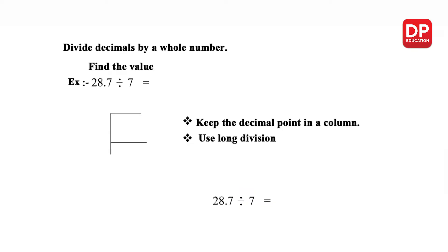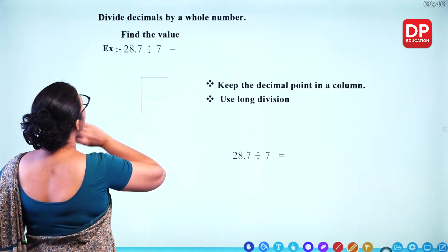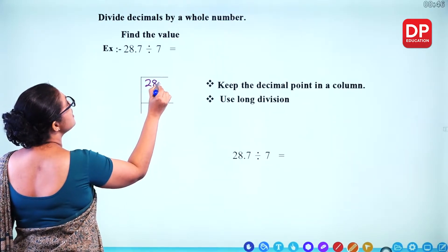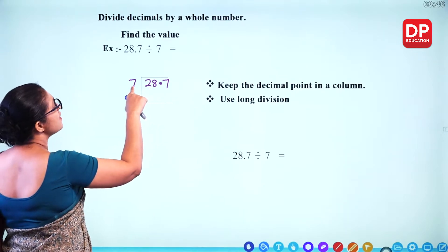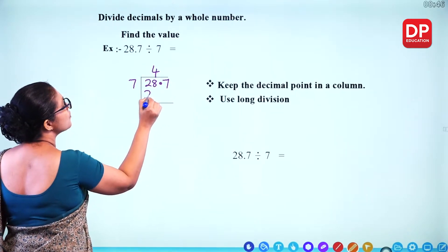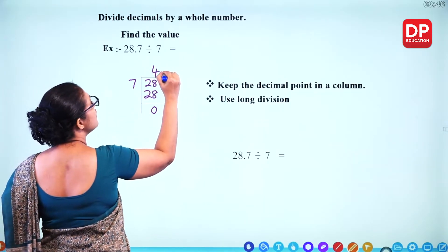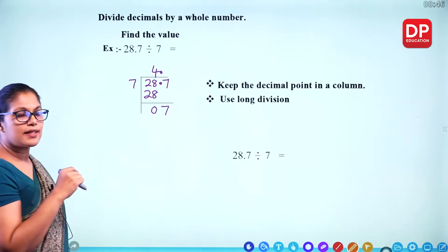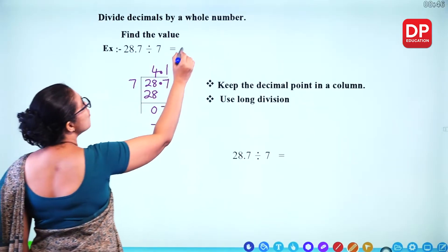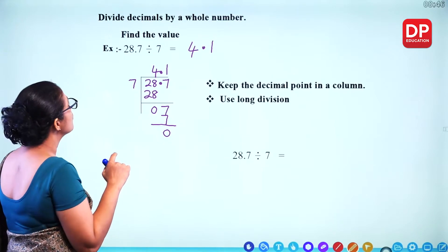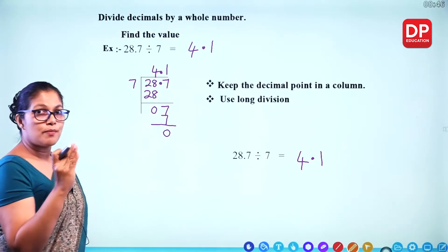Now we will see how we divide decimals by a whole number using long division. Write down the number to divide — 28.7 — and write the divisor 7 here. How many 7s for 28? That is 4, with 28 subtracted giving 0 remaining. Align the decimal point in a column. For 7, how many 7s? Just 1, giving 0 remainder. So the answer is 4.1. Always remember to keep the decimal point in a column.